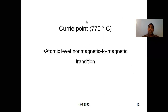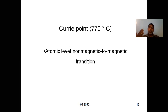The Curie point is the temperature at which magnetic properties change — that is, the transition from magnetic to non-magnetic or non-magnetic to magnetic. Alpha iron has both magnetic and non-magnetic states. The temperature at which this atomic-level non-magnetic to magnetic transition occurs is known as the Curie point.